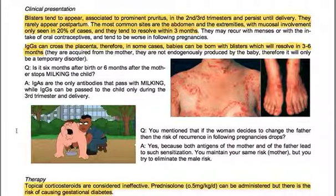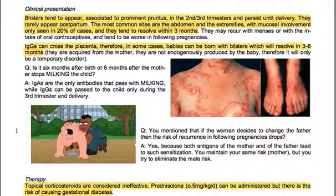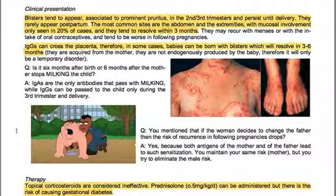IgGs can cross the placenta, so in some cases babies can be born with blisters, which will resolve in 3–6 months. These are acquired from the mother, not endogenously produced by the baby; therefore it will only be a temporary disorder.